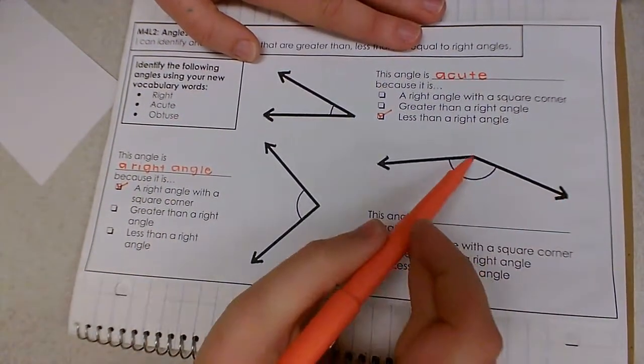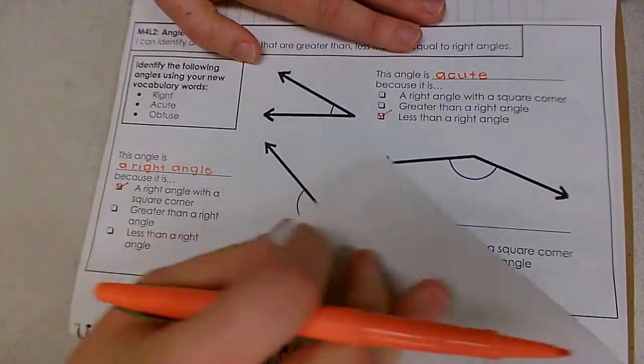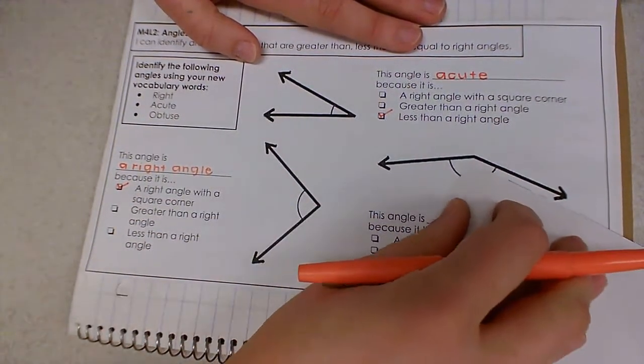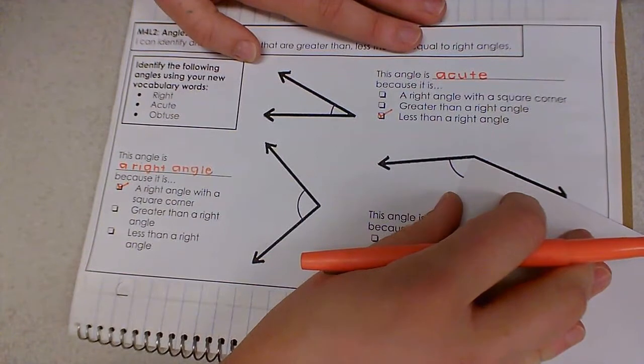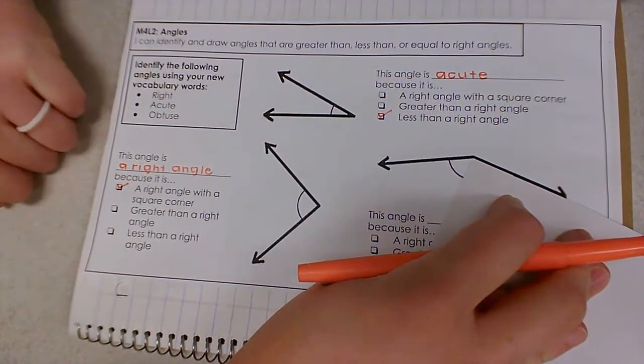So that means our final angle must be obtuse. Let's confirm that with our straight edge. If I line up my note card to one of the lines, I notice that the other line extends way far past the note card.